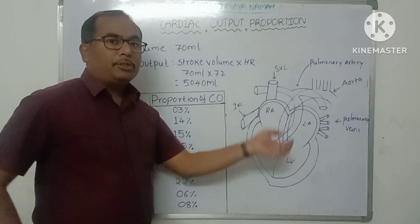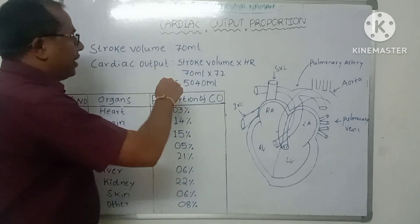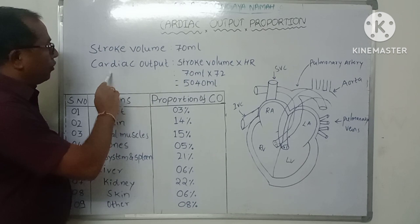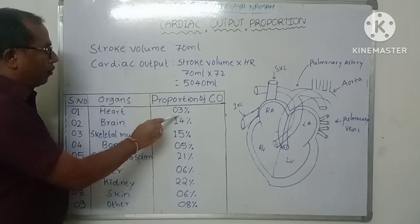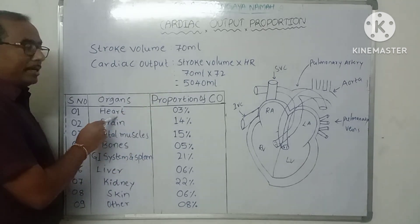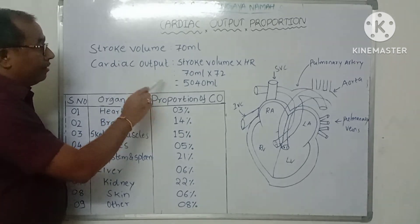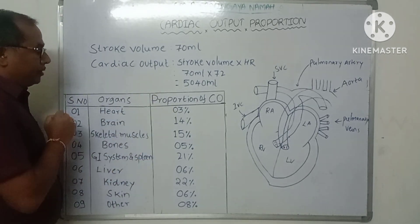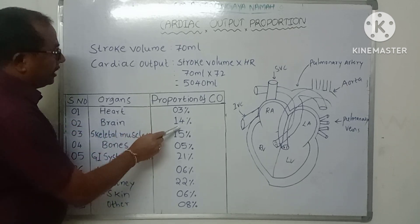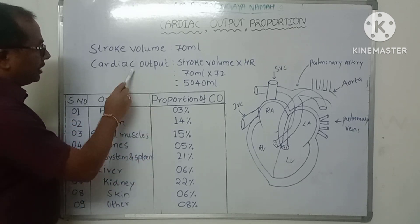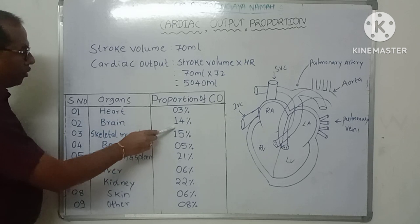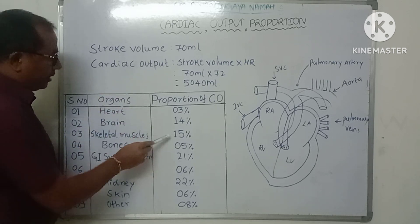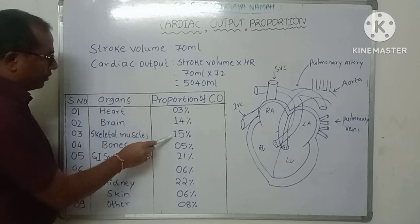Out of this 5040 ml, 3 percent of cardiac output perfuses to the heart itself, and 14 percent of cardiac output goes to the perfusion of the brain.